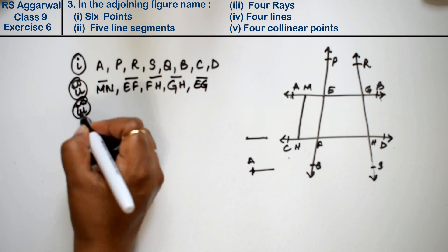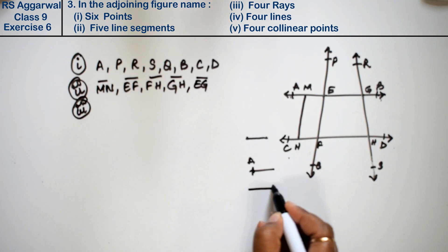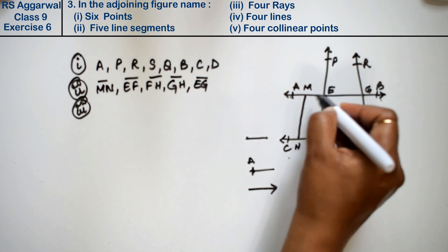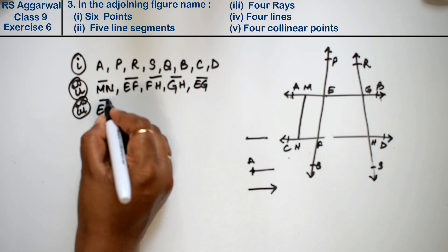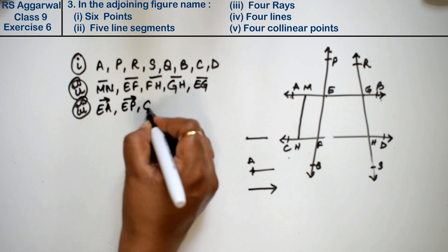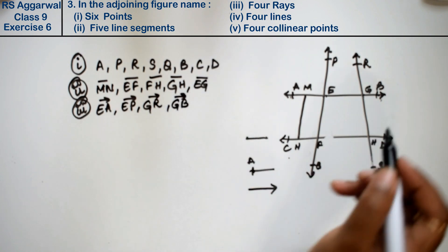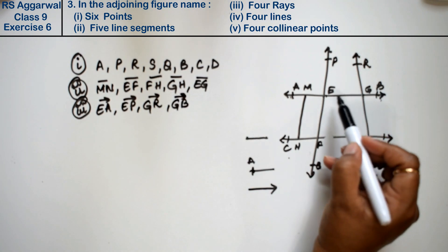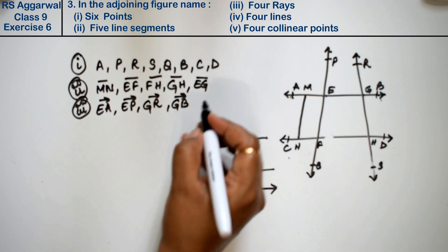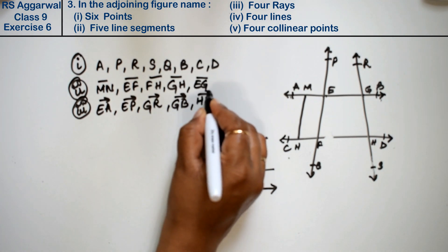Let's do the third part: 4 rays. A ray has one fixed endpoint and extends infinitely in one direction. So the rays are: EA, EP, GR, GB, FP, and HR.